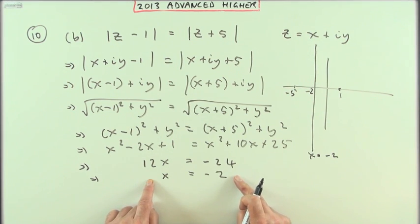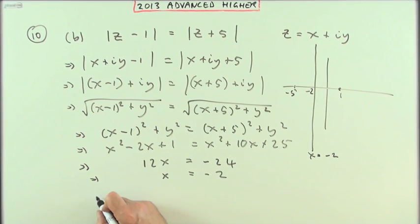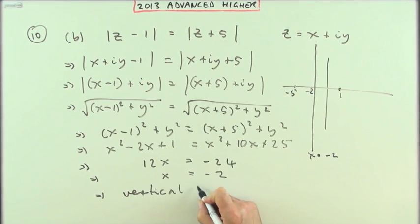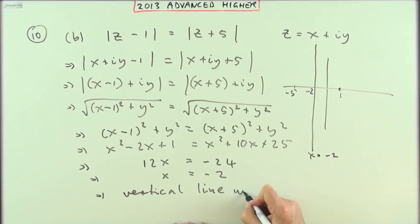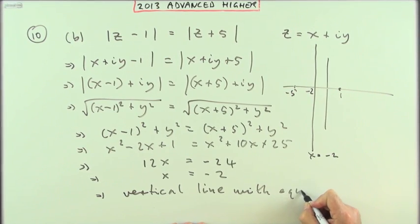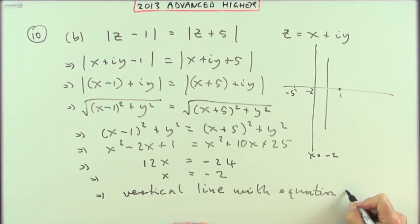What's the interpretation of that as an equation? That's a vertical line through the point x equals negative two. You've got a vertical line with equation x equals negative two, and so it was.